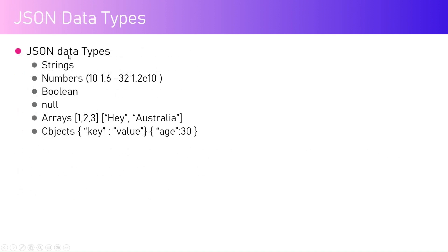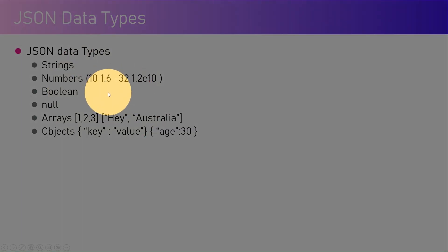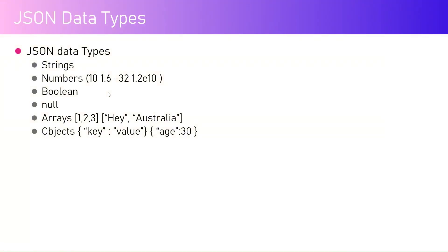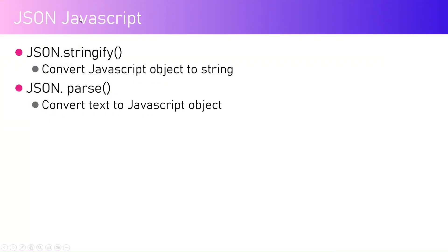Now, what are the different data types JSON has? It has string, number, boolean, null, arrays, and objects. I'll demonstrate these in a live example and walk you through them. JSON also has its own methods within JavaScript to deal with conversion.